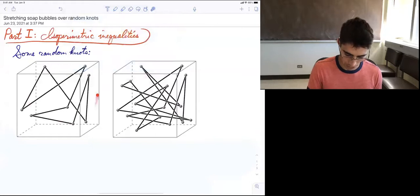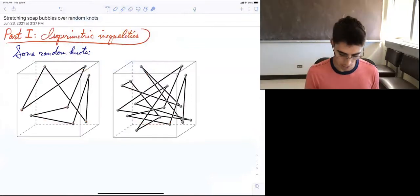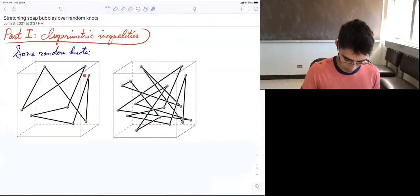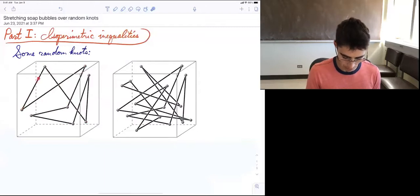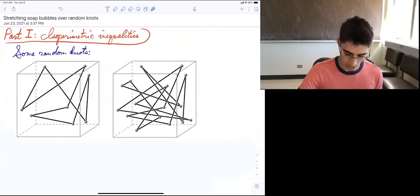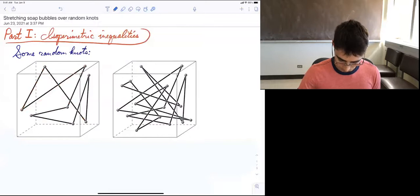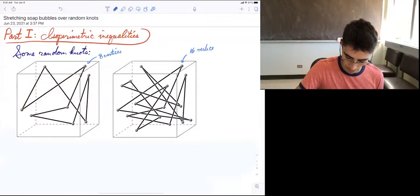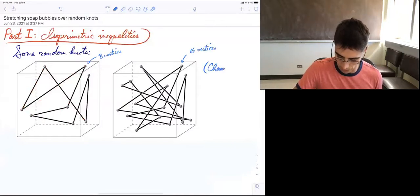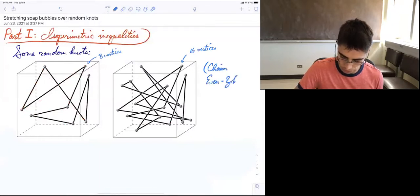Here are some random knots in the cube. The way I constructed these is by picking completely random points in the cube in order and then connecting them with line segments. This one has eight vertices, this one has 16 vertices. Actually, I didn't make these, I stole them from a guy named Chaim Evans Ohar. Thank you to him.